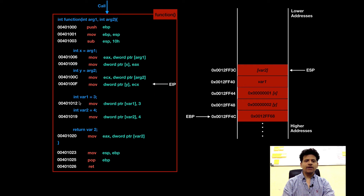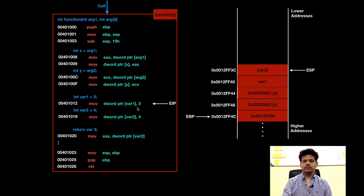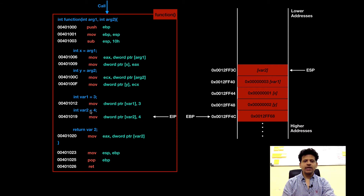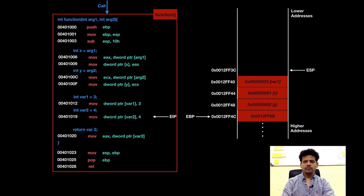Next, the function is defining a new variable: Integer var1 equals 3. For that, 3 will get moved into the address pointed by var1. Let's do that. Next, the function is declaring a new variable: Integer var2 equals 4. For that, 4 will get moved into the address pointed by var2. Let's do that. It got moved.